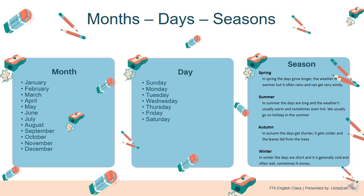For seasons, this is more relevant to subtropical countries. Subtropical regions have four seasons, similar to cold climates: Spring, Summer, Autumn, and Winter — musim semi, musim panas, musim gugur, musim dingin. In Autumn, the days get shorter, it gets colder, and the leaves fall from the trees. But in Indonesia, there are only two seasons: musim kemarau and musim penghujan — dry season and rainy season.